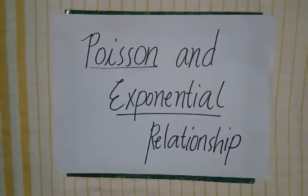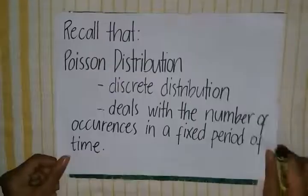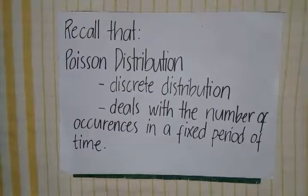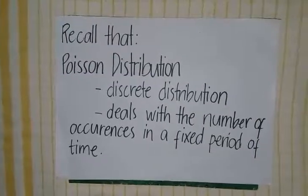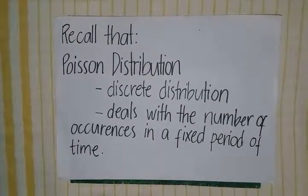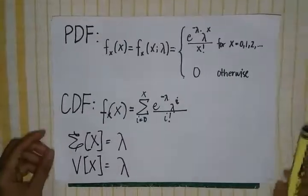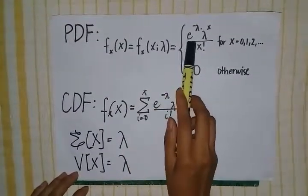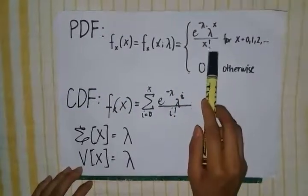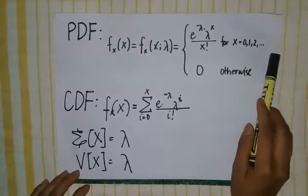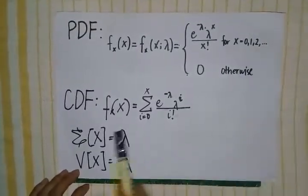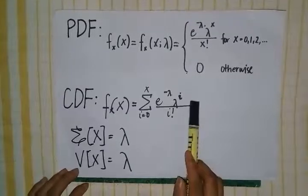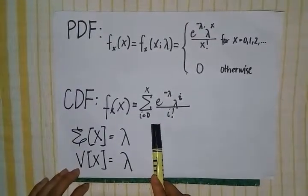Poisson distribution is a discrete distribution, which means the random variable takes on fixed integer values. It deals with the number of occurrences in a fixed period of time. The PDF is f(x | λ) = e^(−λ) · λ^x / x! for x = 0, 1, 2, and so on, and 0 otherwise. The CDF is F(x) = Σ e^(−λ) · λ^i / i! for i from 0 to x.